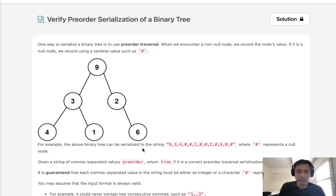So for example, the above binary tree can be serialized to the string 9, 3, 4, hash, hash, 1, hash, 2, hash, 6, hash, where hash represents a null node.